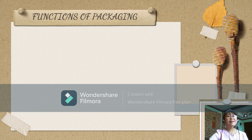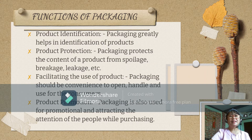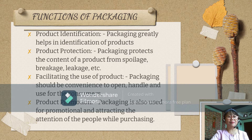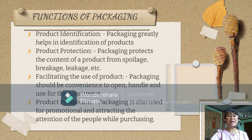Ivana, what are the functions of packaging? You are correct. We have product identification, product protection, facilitating the use of product, and product promotion. In product identification, packaging greatly helps in identifying products — what product will be found inside a package. In product protection, packaging protects the content of a product from spoilage, breakage, leakage, etc. Facilitating the use of product means packaging should be convenient to open, handle, and use for the consumers. While in product promotion, packaging is also used for promotional purposes and attracting the attention of people while purchasing.